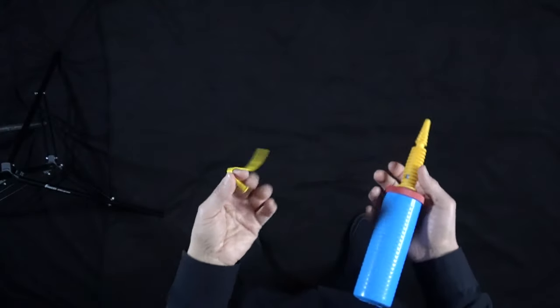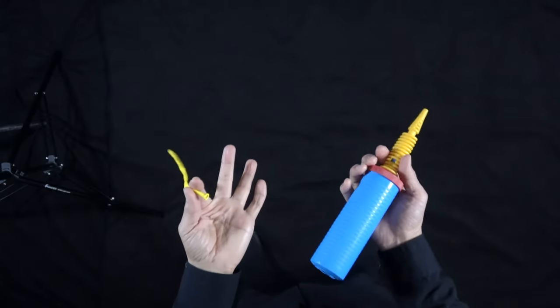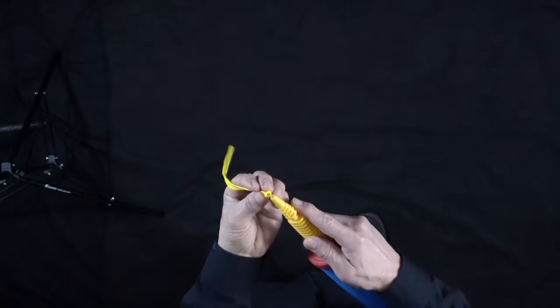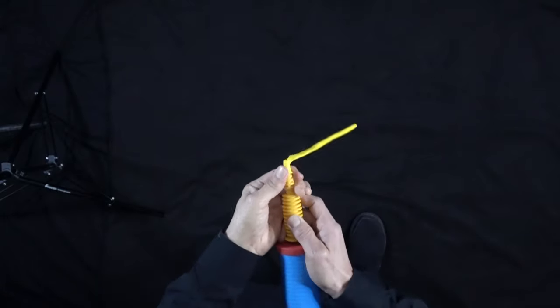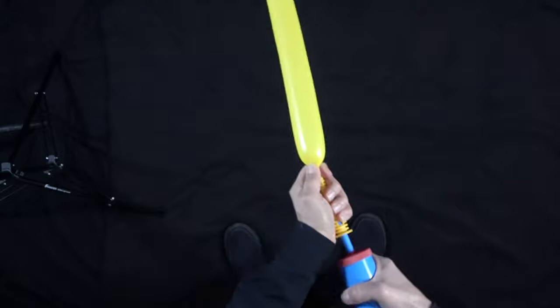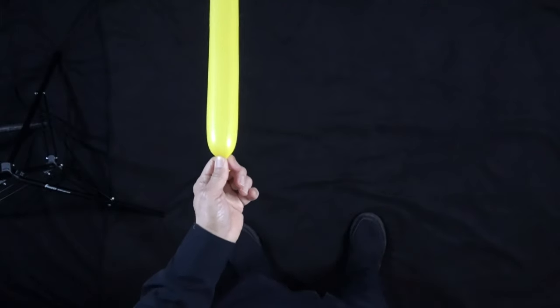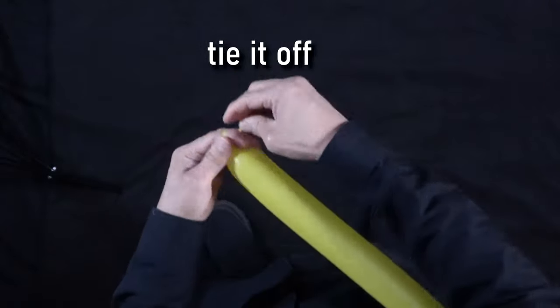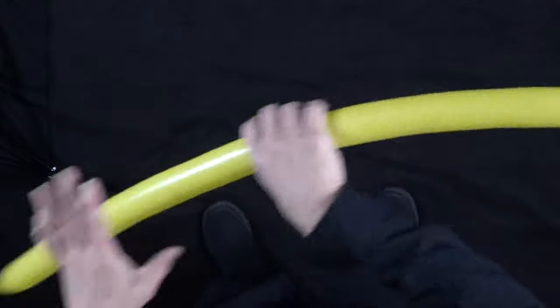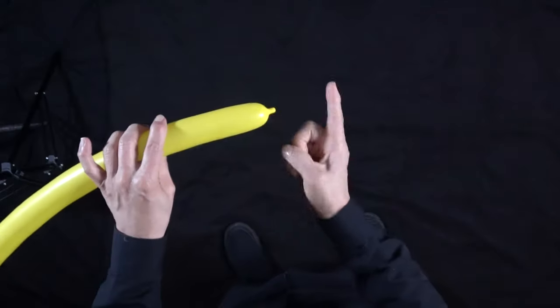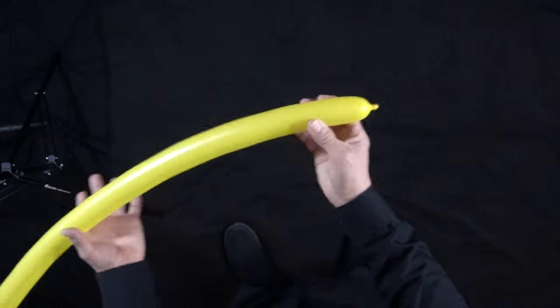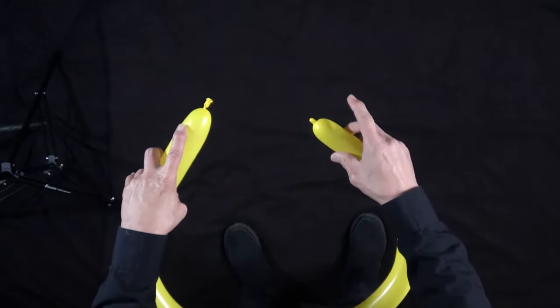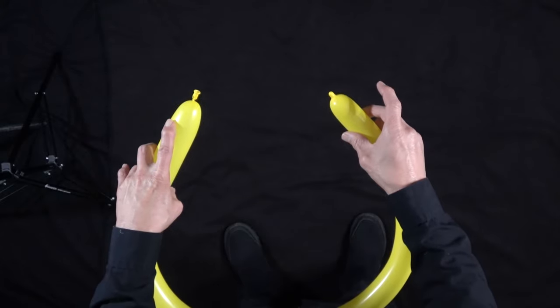You're going to need two balloons. First of all, we're going to make the wings, so I'm going to make yellow wings here. Inflate your balloon almost all the way. Starting with our nozzle end, we're going to tie the nozzle to the end here. We're going to make...